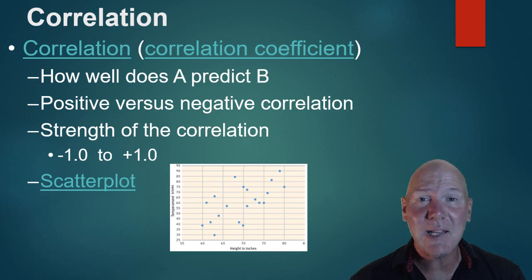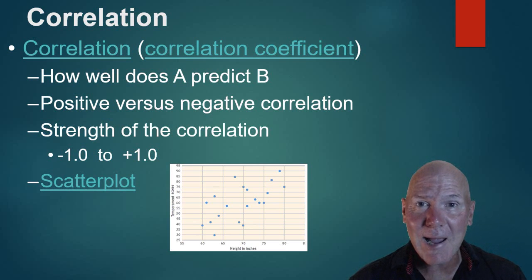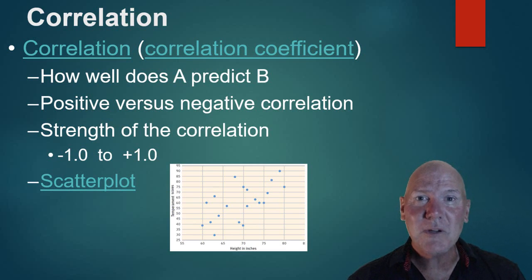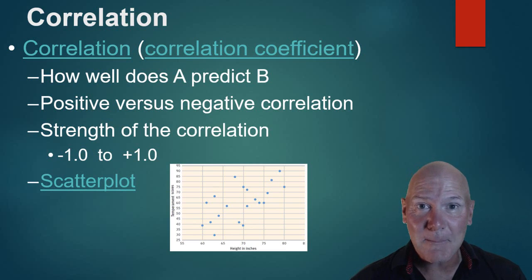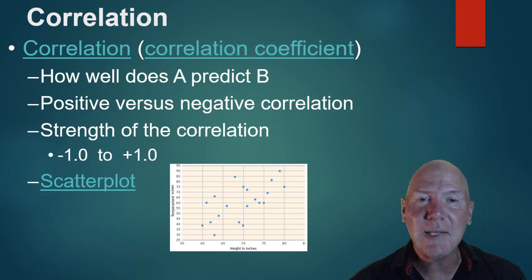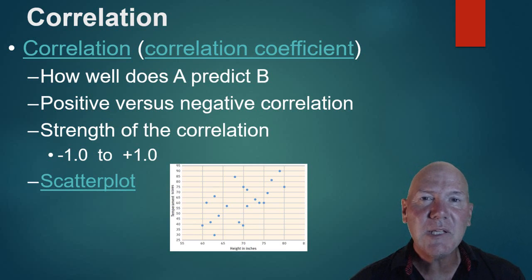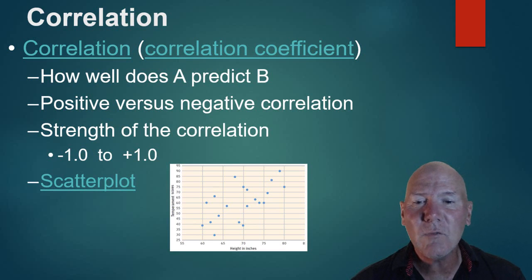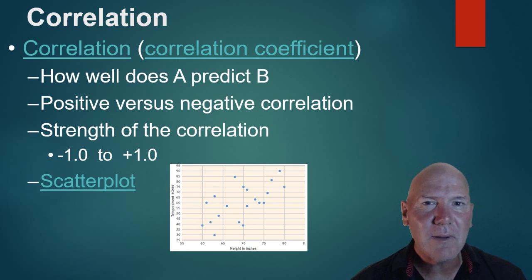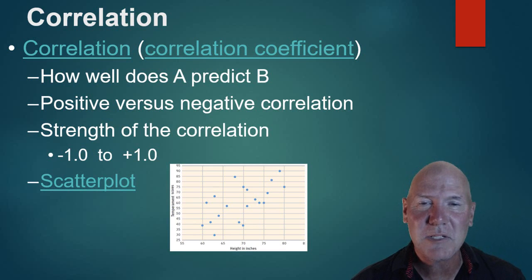A positive correlation means the more A occurs, the more B occurs. We can also have a negative correlation — for example, the more time spent online, the lower our scores go. So it's: the more A, the less B — that is a negative correlation. The statistical measure we use is called a correlation coefficient, a calculation that shows how closely two things are related. It's always a number between negative one and positive one. Negative one and positive one are equally correlated — the sign just indicates the direction.